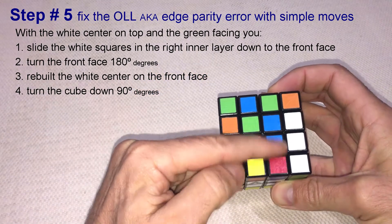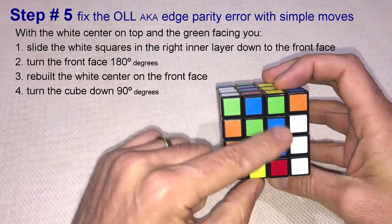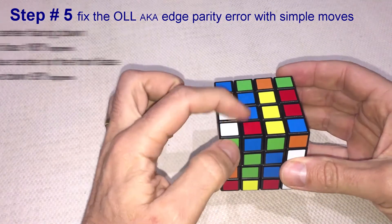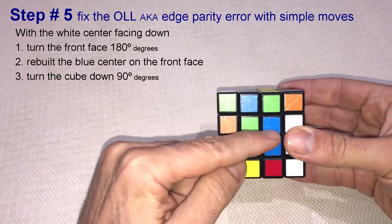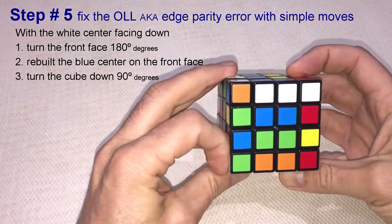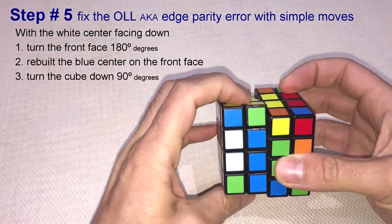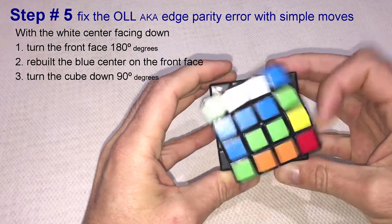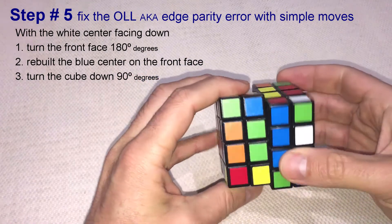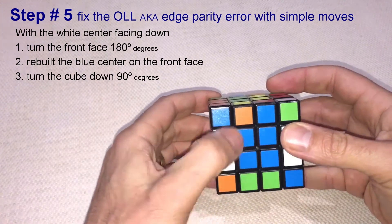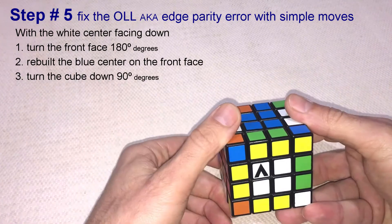Now, turn the cube down 90 degrees and let's repeat the same sequence to the blue squares. Move the blue squares to the left inner layer. Slide the blue squares on top down to the front and move them to the right inner layer. Bring back the blue squares on bottom and fix the blue center.